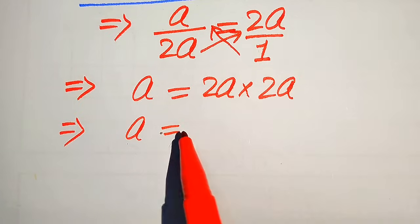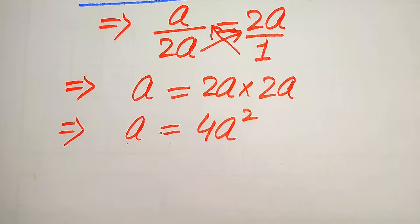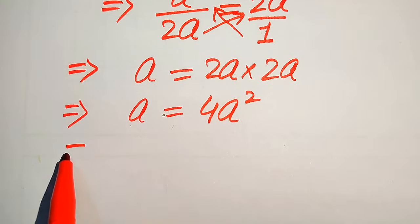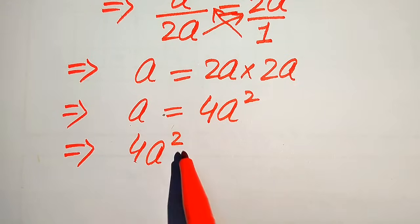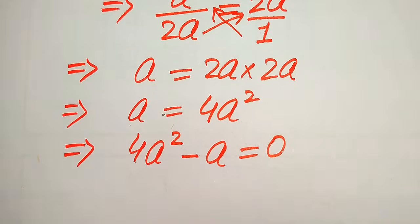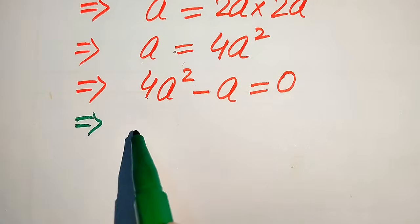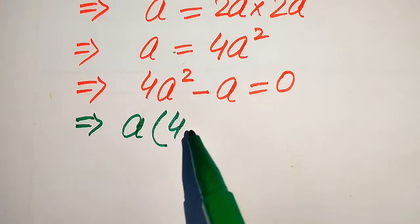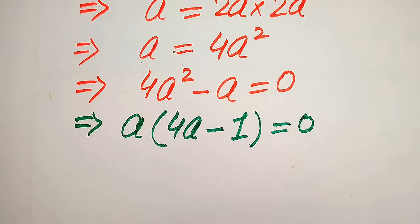We have a equals two times two, which gives four, and a multiplied by a equals a squared. To find the roots, we move this a to the right-hand side — the positive a becomes negative a — giving us four a squared minus a equals zero. Both terms involve a, so we factor out a.